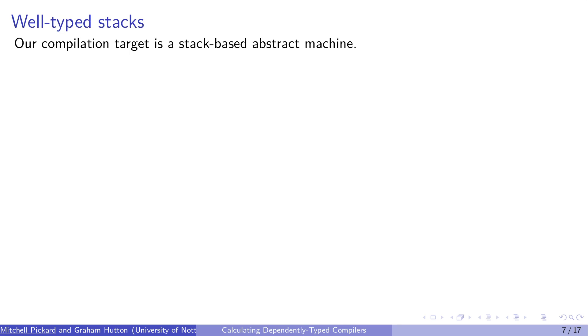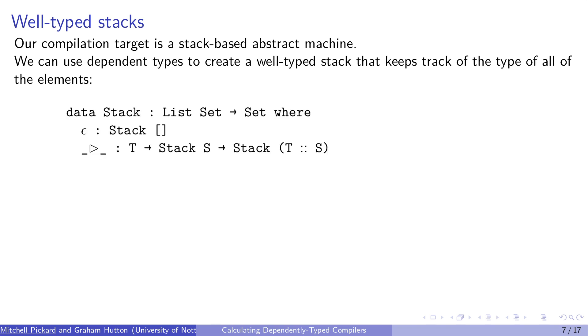Our compilation target is going to be a stack-based abstract machine, but we want it to be completely well typed. So we use dependent types to keep track of the type of all the elements on the stack, and what order they're in. So our stack data type is again indexed, this time by a list of types. This list will tell us the order and the type of all the elements on the stack.